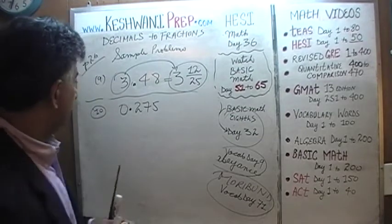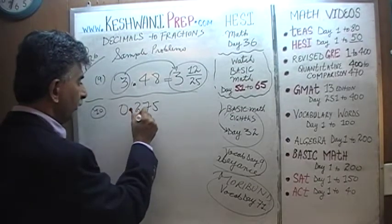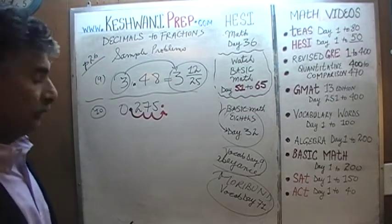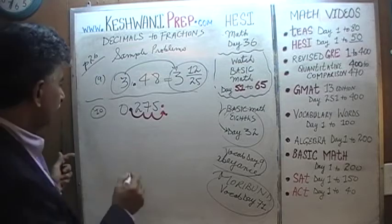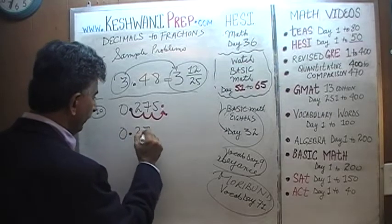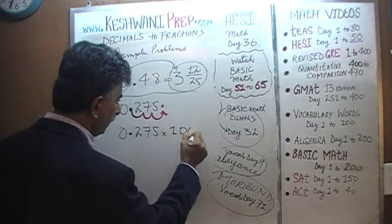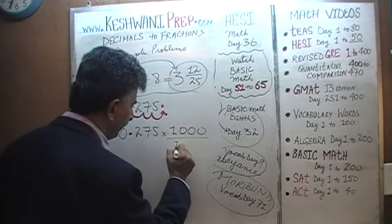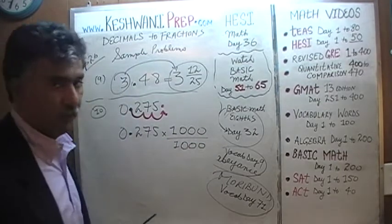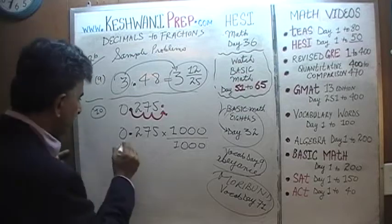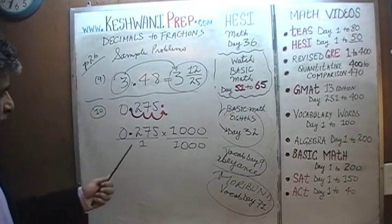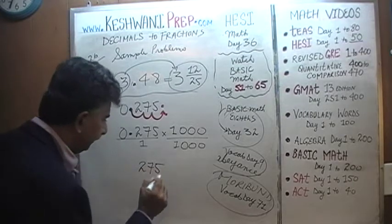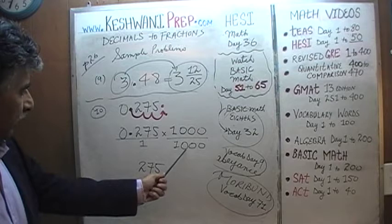Here we need to move the decimal 3 places — 1, 2, 3. In other words, we need to multiply 0.275 by 1 with 3 zeros: 1,000. If we multiply the top by 1,000, we must multiply the bottom by 1,000 — because 1,000 over 1,000 is 1, so we are not changing anything. 0.275 times 1,000 is 275, and 1 times 1,000 is 1,000.